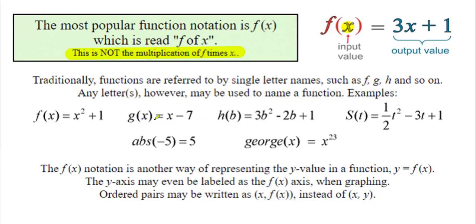Any value in our parentheses is our input value, and the expression equal to f of x is our output value. We can name our function anything — common ones are f, g, or h — and the input variable can be x, b, t, or others. For example, 'george of x equals x to the 23rd power.' Remember: y equals f of x, and an ordered pair is written as x comma f of x.